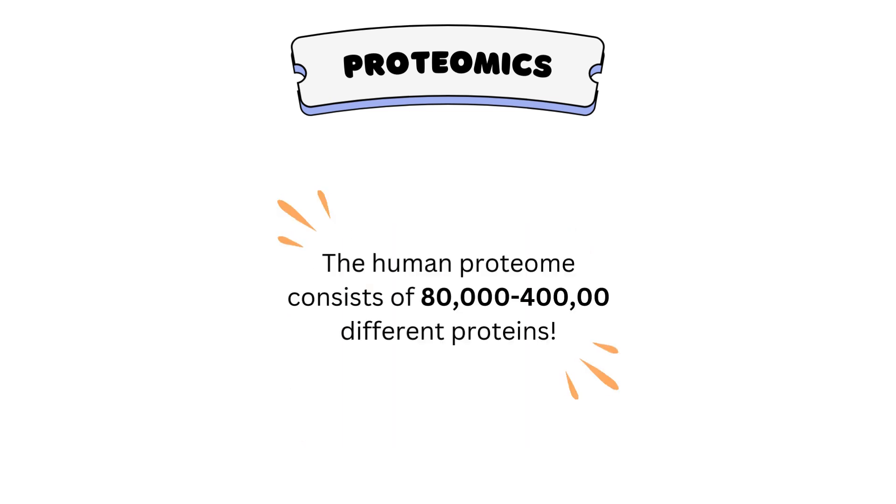Researchers currently estimate that the human proteome consists of between 80,000 and 400,000 different proteins.